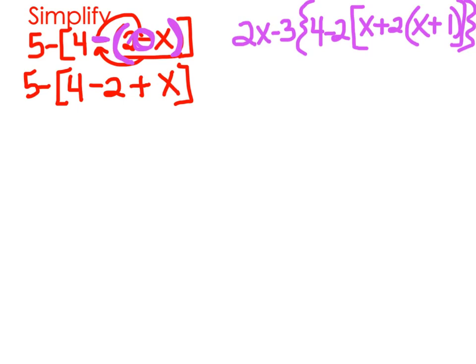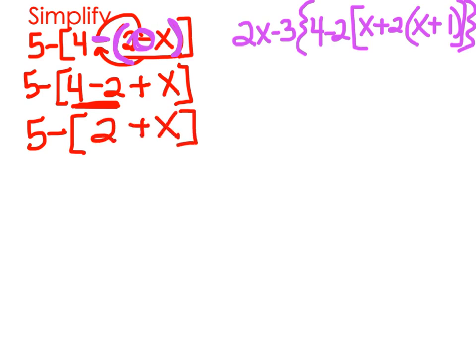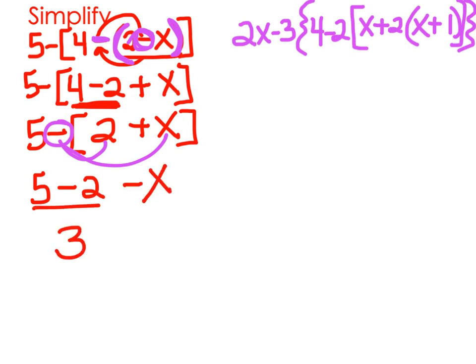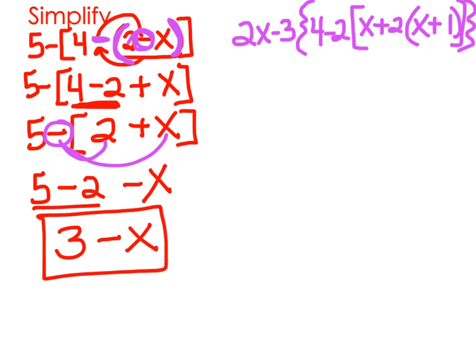So now we have 5 minus bracket, 4 minus 2 plus x. We can simplify by putting 4 minus 2 together: 5 minus bracket, 2 plus x. I've got another minus sign here that I need to distribute to both of these, so I have 5 minus 2 minus x. And 5 minus 2 is 3, so 3 minus x. That is simplified and equivalent to the original expression.